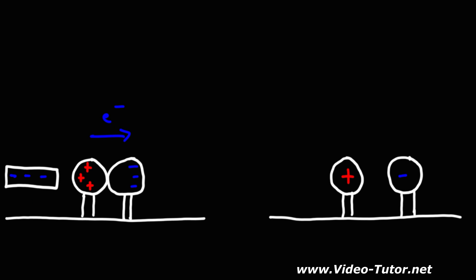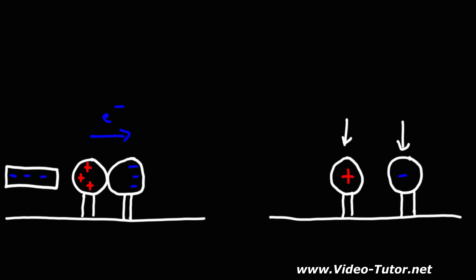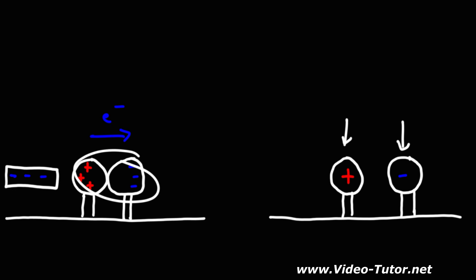That is charging by induction. We were able to charge these two metal spheres using another charged object, but there was no contact involved between the two metal spheres and the negatively charged metal rod. Charging by induction is when you have a charged object and use it to induce a charge in another object without the charged object touching the neutral object.